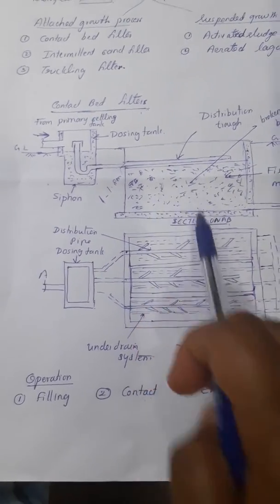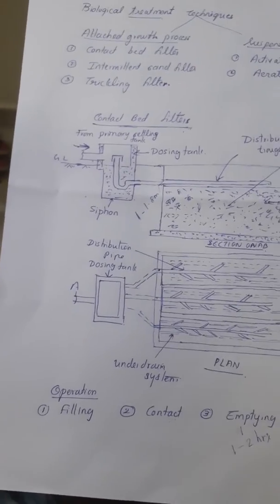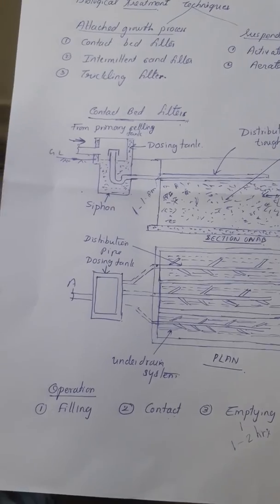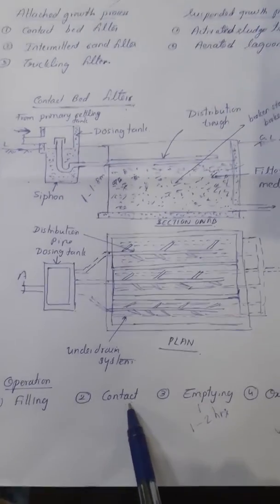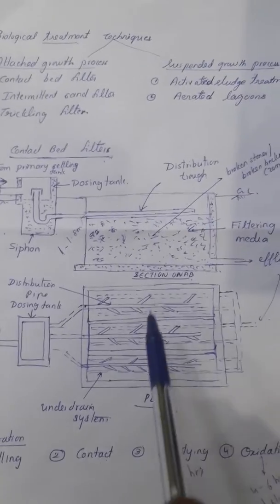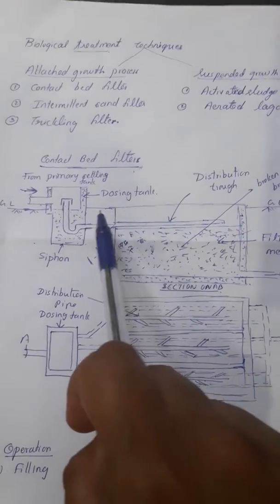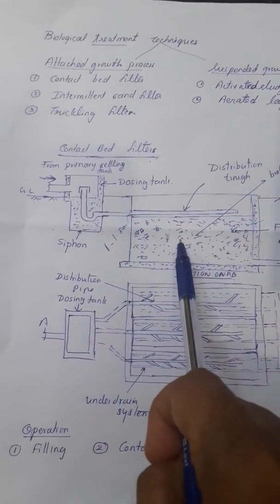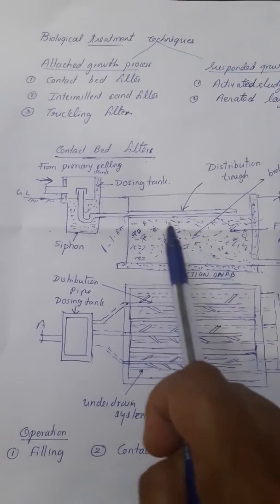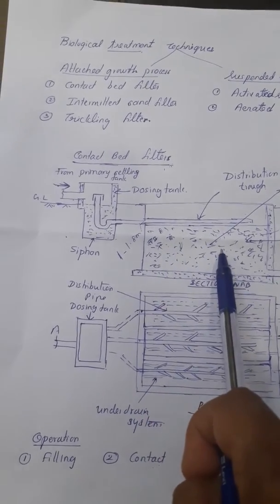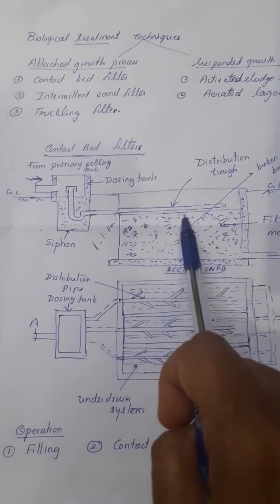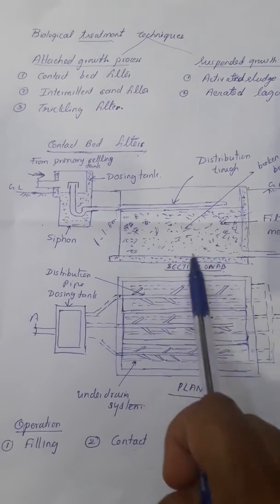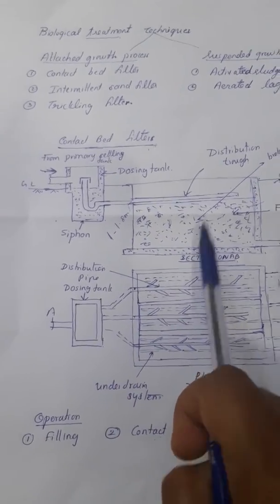The second operation is contact. Contact means the dosing tank outlet is then closed, and the sewage admitted over the contact bed is allowed to stand for about 2 hours. During this period, the colloid and dissolved matter get transferred to the filter media and come in contact with the bacterial film covering the filter media.